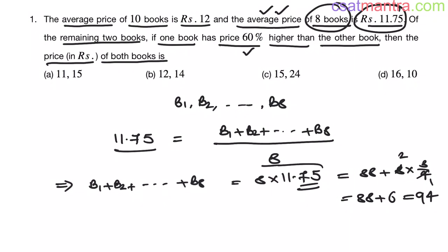Rather than multiplying the whole decimal, I just split it. 8 into 11 is 88, 8 into 0.75 - 0.75 is 3 by 4. This makes our life easier. Now, of the remaining 2 books, in total we have 10 books. We have calculated the total price of 8 books, that is 94.